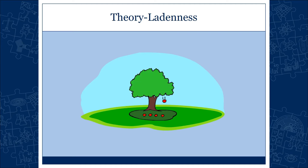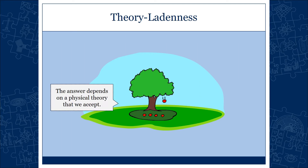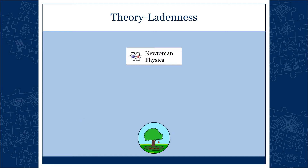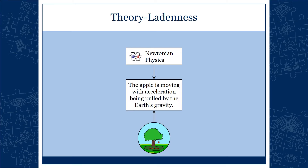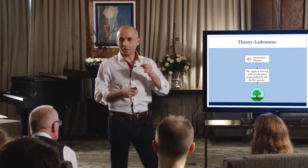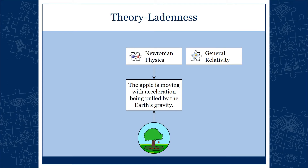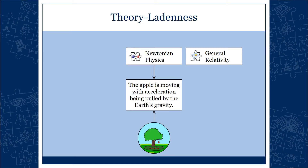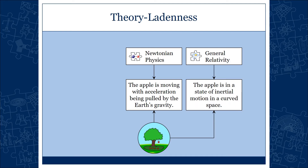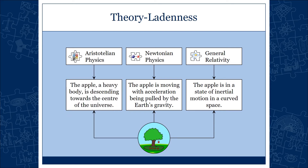What is theory-ladenness? Let's take a very basic phenomenon and ask: what's going on when an apple falls? The answer depends on the theory you accept. With Newtonian physics, the apple is moving with acceleration, being pulled by Earth's gravity. Nowadays, we believe there is no such thing as gravity — just curved spacetime continuum. Massive objects curve the spacetime continuum around them, and as a result, the apple is in a state of inertial motion in that curved spacetime.